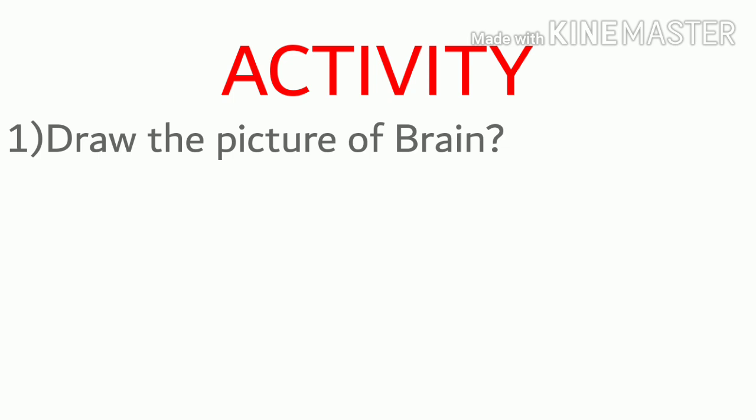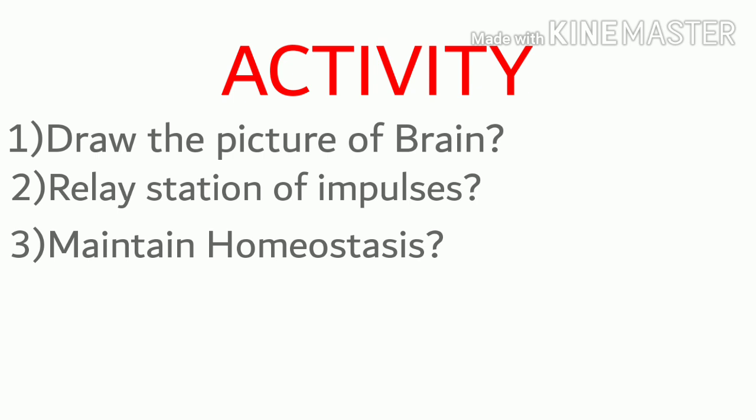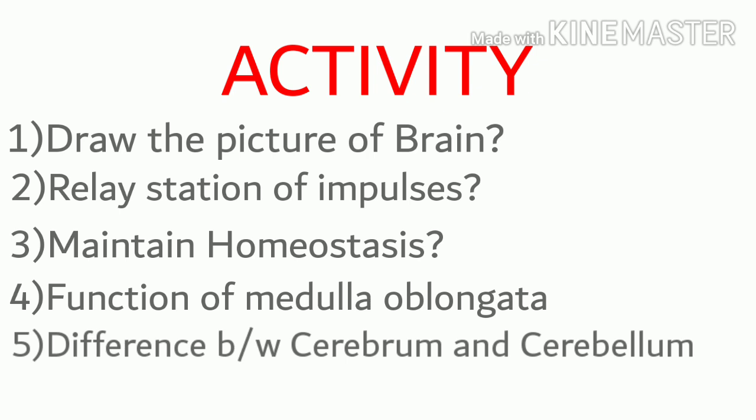Let us do some activities. First, draw the picture of the brain and label the parts. Second, which part acts as the relay station of impulses? Third, which part of the brain helps to maintain homeostasis? Fourth, what is the function of medulla oblongata? Fifth, what is the structural and functional difference between cerebrum and cerebellum?